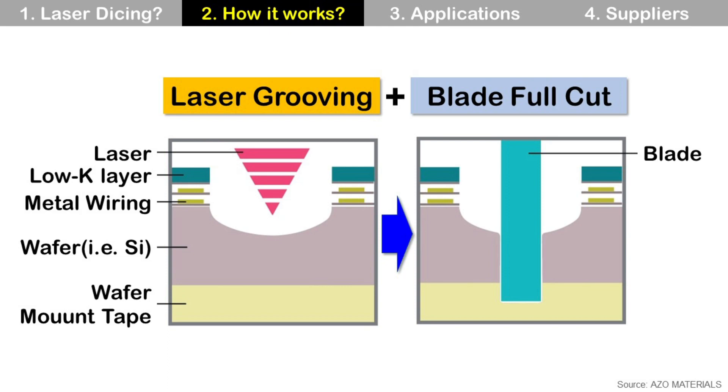Laser grooving is to remove part of wafer surface, then complete wafer dicing by following blade dicing. For this picture, part means low-K layer, metal wiring, and some of silicon wafer. The reason we use laser grooving is to remove low-K layer without damage or stress, because low-K layer is precise and sensitive to mechanical stress. So if you use conventional blade dicing, its mechanical stress damages this low-K layer then can cause delamination. This low-K material is used for advanced silicon nodes like 7nm and 5nm devices.